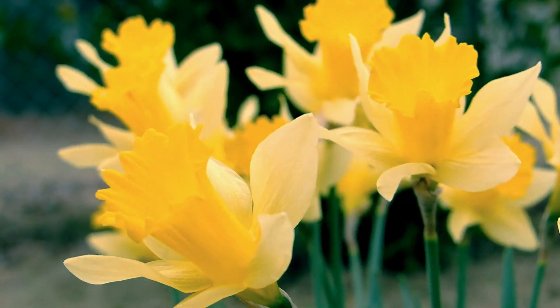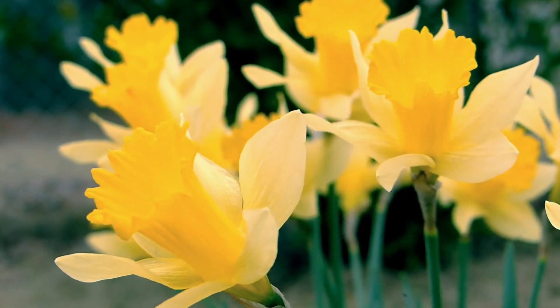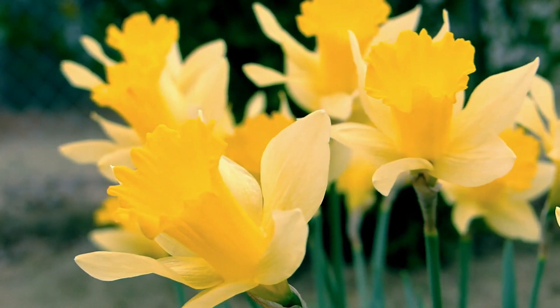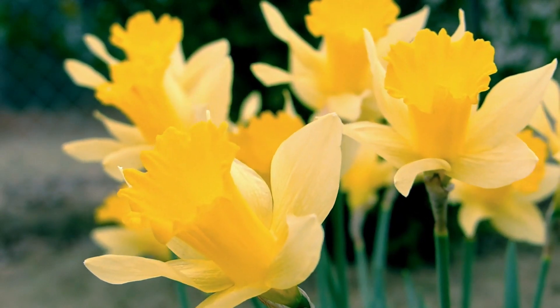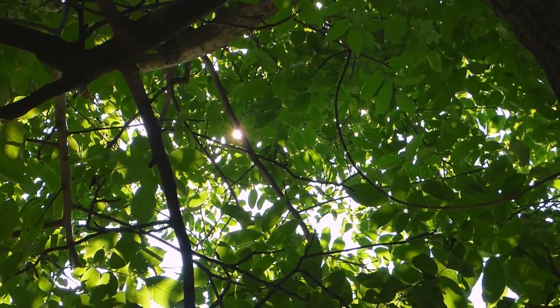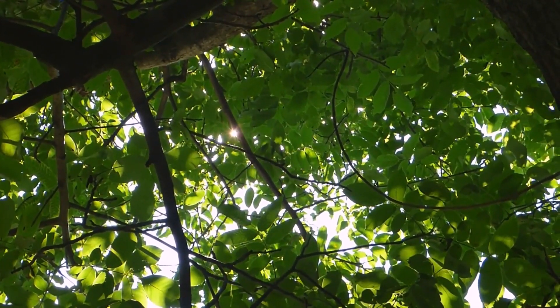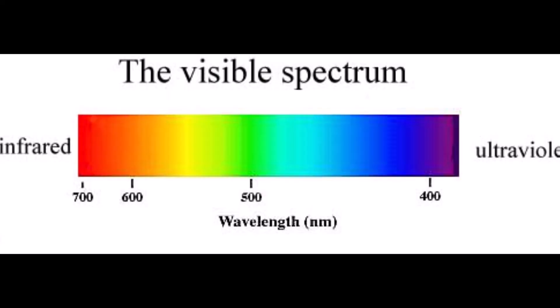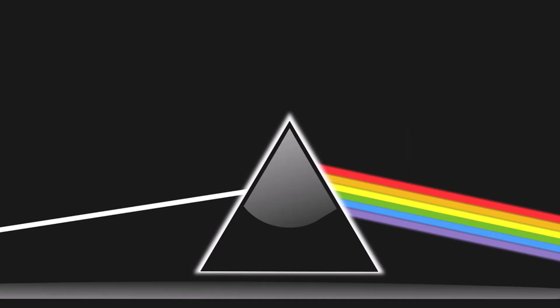Color is a quality of light, resulting from the selective absorption and reflection of specific wavelengths. White light, such as sunlight, contains a range of wavelengths visible to the human eye that is called the visible spectrum. When white light is refracted through a prism, the visible spectrum can be seen separated into a rainbow of color rays, from red to violet.